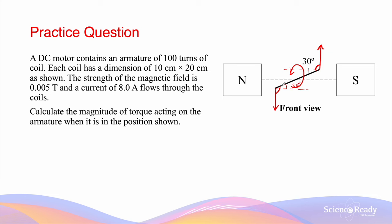So this whole angle is 30 degrees plus 90 degrees, as this angle is perpendicular. Therefore, the angle theta between the force vector and the armature is 30 + 90 = 120 degrees.